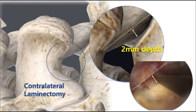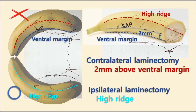We can say the conclusion first. Contralateral laminectomy must be resected about 2 mm above from the ventral margin of the contralateral lamina. On the ipsilateral side, we are looking down straight, so laminectomy can be done along the high ridge. On the contralateral side,